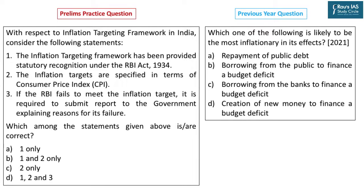Let's talk about inflation in the context of India. With respect to the inflation targeting framework in India, consider the following statements. The inflation targeting framework has been provided statutory recognition under the RBI Act 1934 — this is correct, done by an amendment in 2016. Inflation targeting in India is done as per CPI, not WPI — also correct. And if RBI fails to meet the inflation target for three consecutive quarters, it is required to submit a report to the government explaining the reasons for failure — this is also absolutely correct.